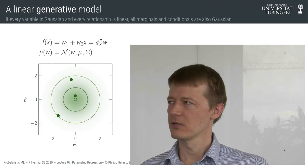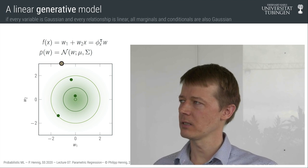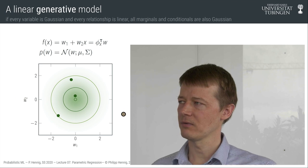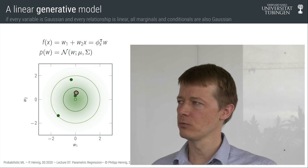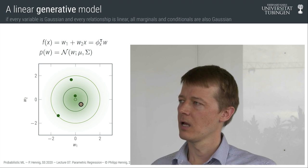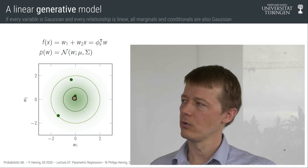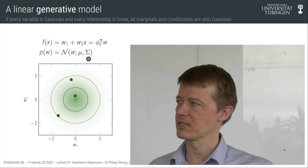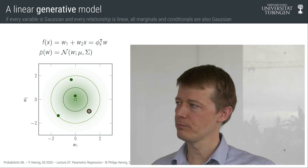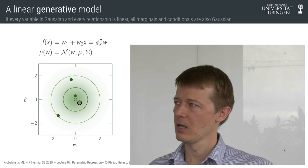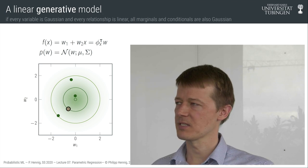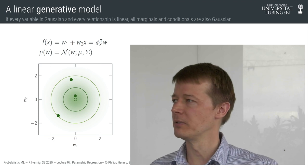We put a Gaussian prior on the weights. Here is such a prior in the bivariate space of w1 and w2. I've decided to use a particularly simple prior: mean vector zero and covariance matrix equal to the unit matrix — that's a standard Gaussian. The PDF is shown as a green shading in the background, and the circles are equipotential lines at one and two standard deviations from the mean. I'm also showing three random numbers drawn from this Gaussian distribution as green dots.